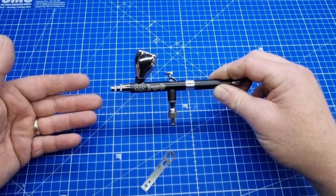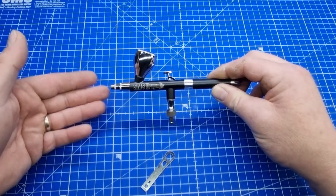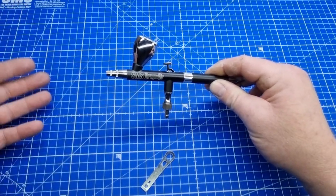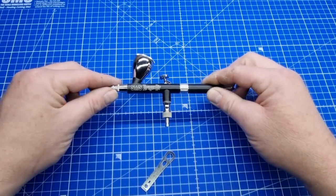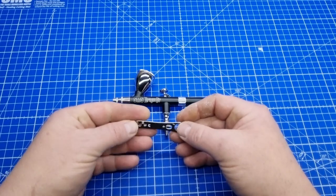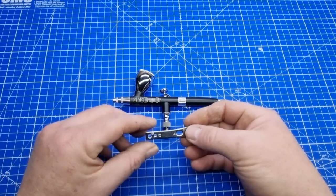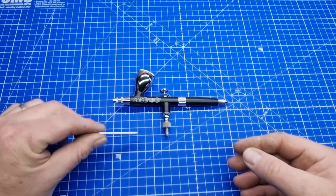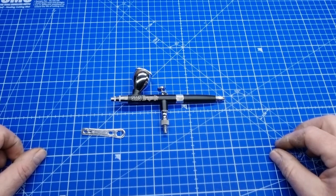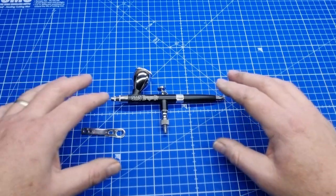In our range, you can also buy the needles and nozzle sets separately and switch them over in your airbrush to make them the size you want. We've got 0.2, 0.3, and 0.5 available. What you'll need is this special spanner that comes with the airbrush in your case, and obviously your airbrush.